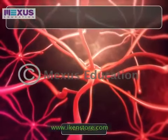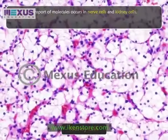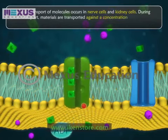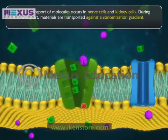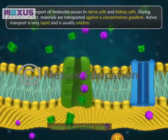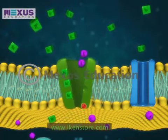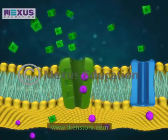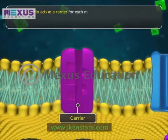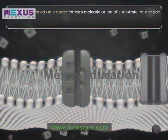Active transport occurs in nerve cells and kidney cells. During active transport, materials are transported against a concentration gradient; it is very rapid and usually unidirectional, and can be affected by cold, cyanide, and the absence of oxygen. A specific protein acts as a carrier for each molecule or ion of a substrate. At one side of the membrane, the carrier molecule bears its binding site.